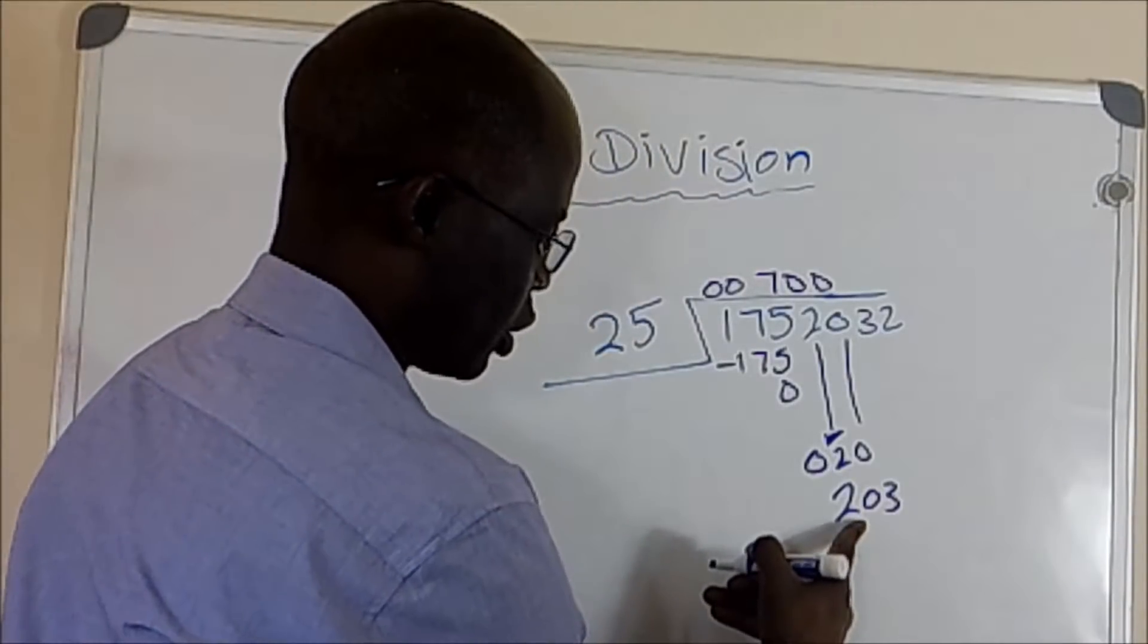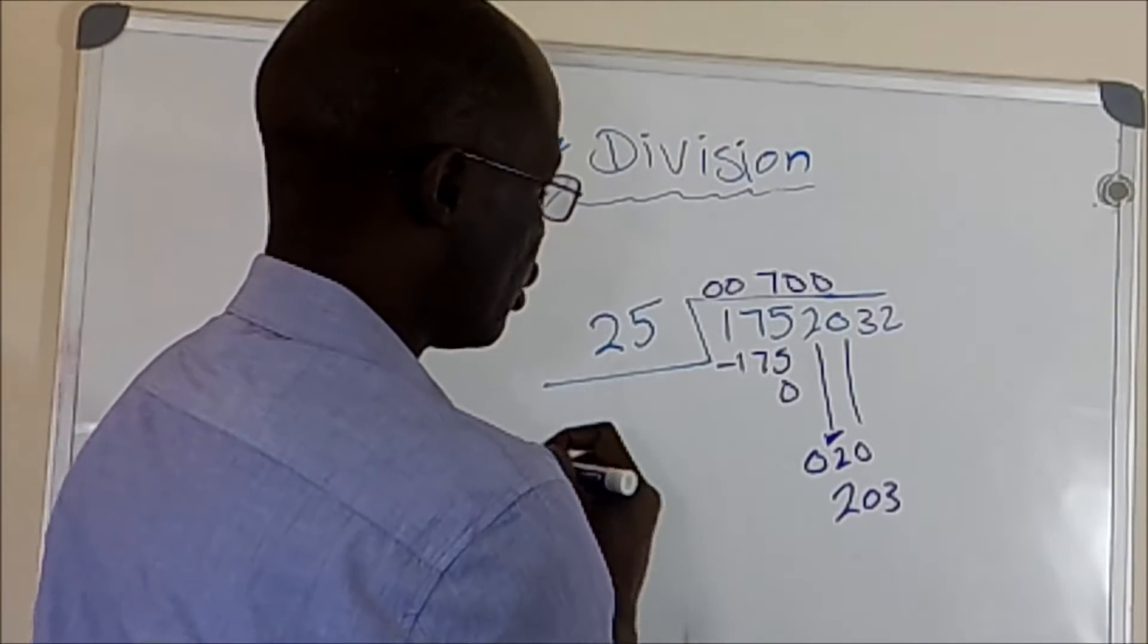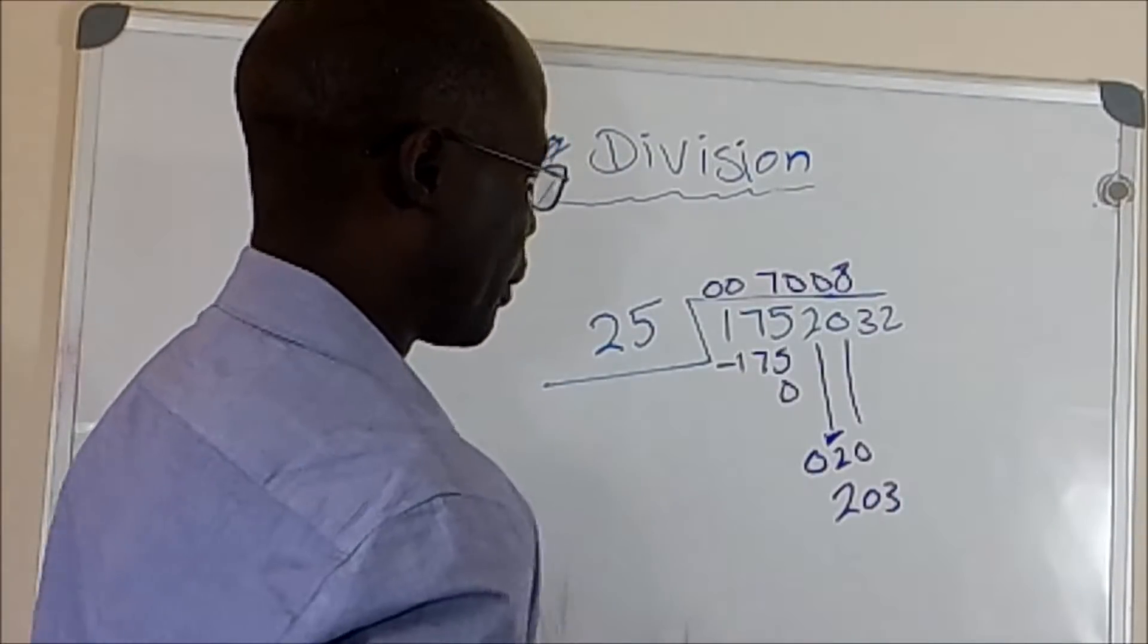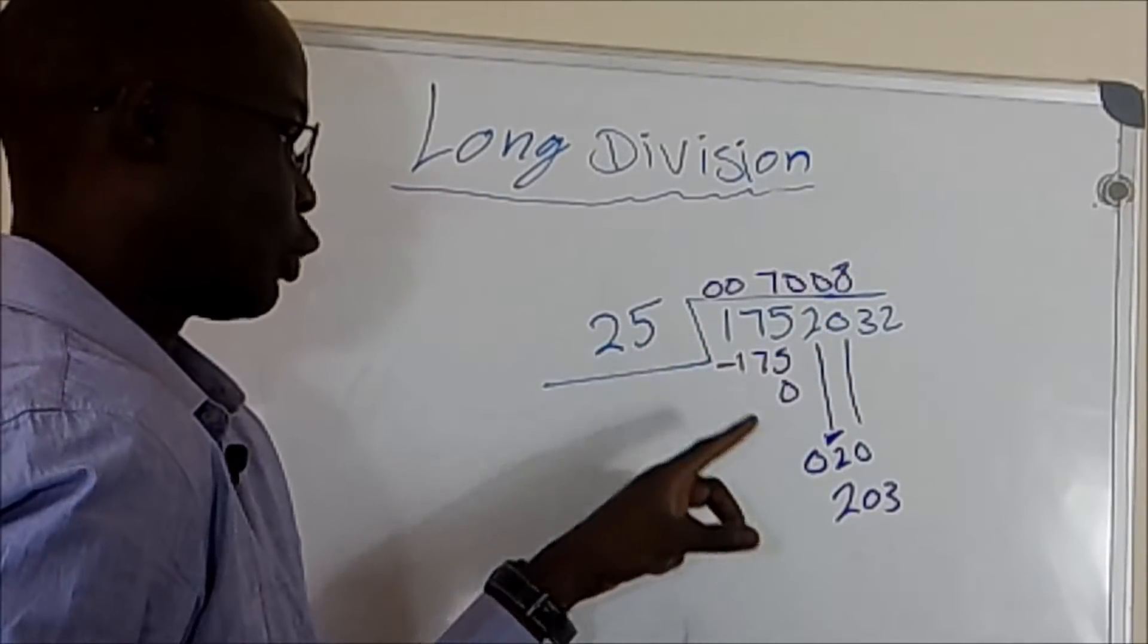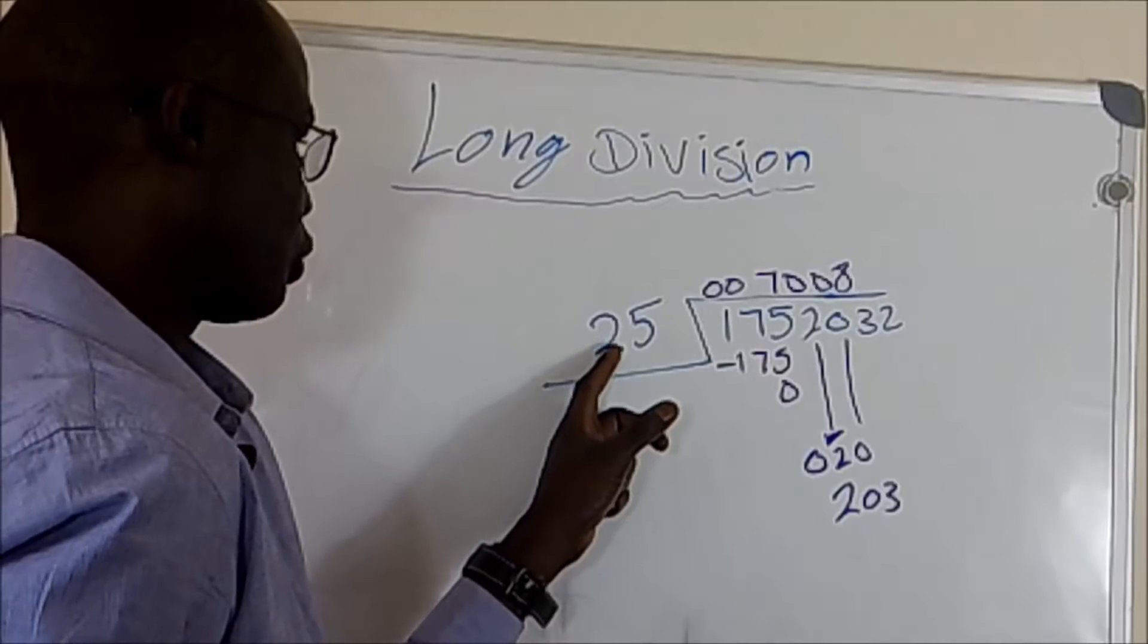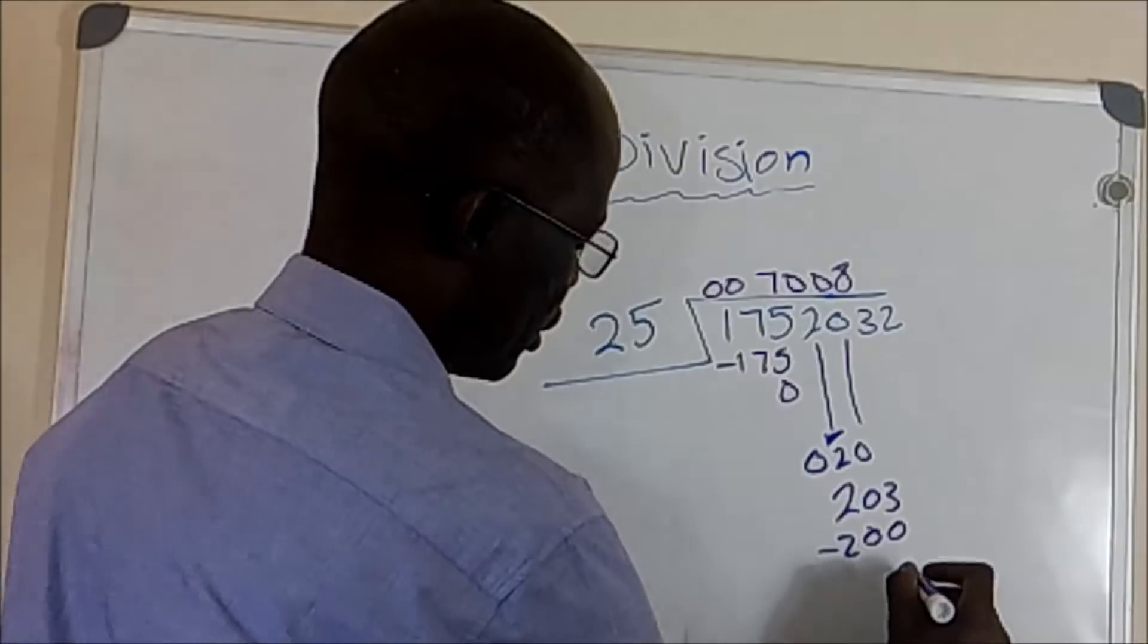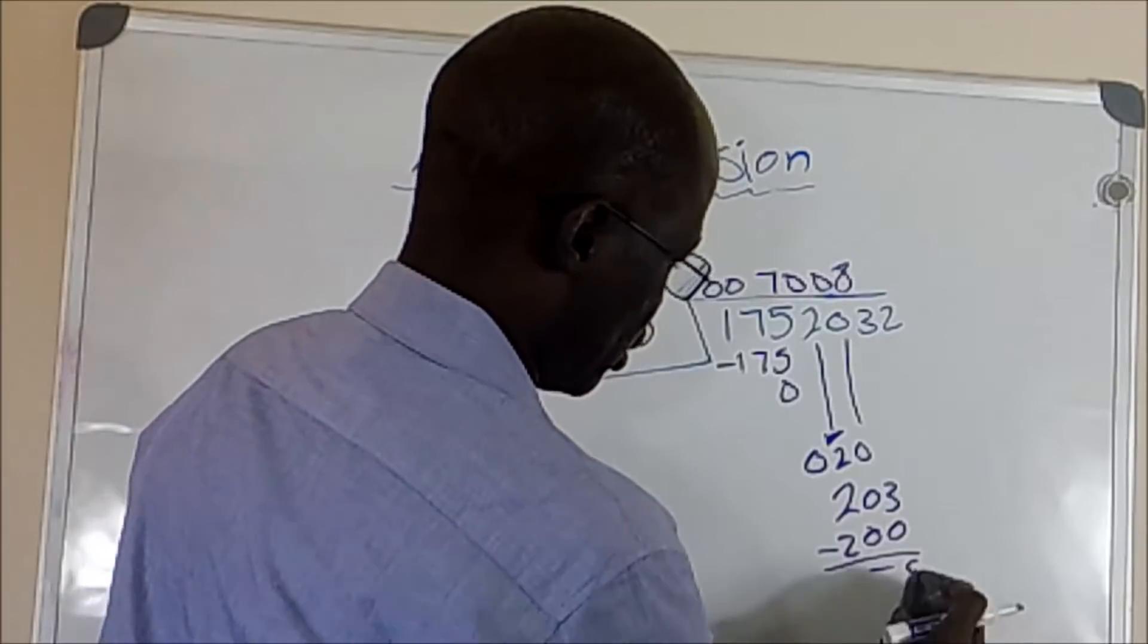And 203 can be divided by 25, because 203 is greater than 25. So if we have 175 as 7, then this one should be 8. And 8 times 5 is 40, so you put 0, and 8 times 2 is 16 plus 4, you got 200. So our answer is right. So you subtract 200 from 203, so you're going to be left with 3.